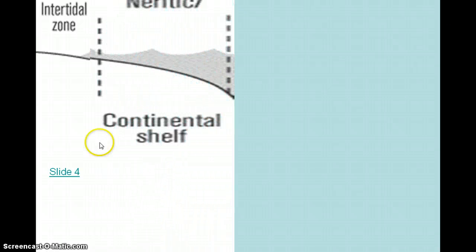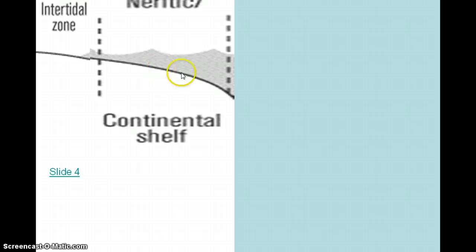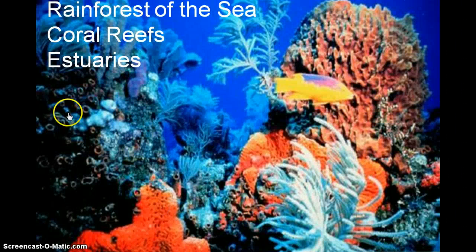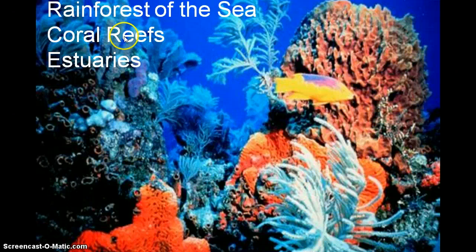The second zone is the neuritic zone. These two zones together can also be called the coastal zone — from the shoreline out to a certain area, making up the intertidal and neuritic zones combined. The continental shelf is found in the neuritic zone. The neuritic zone is the most diverse zone of the marine environment; it's where coral reefs and estuaries are found. It's called the rainforest of the sea because it is the most diverse zone.